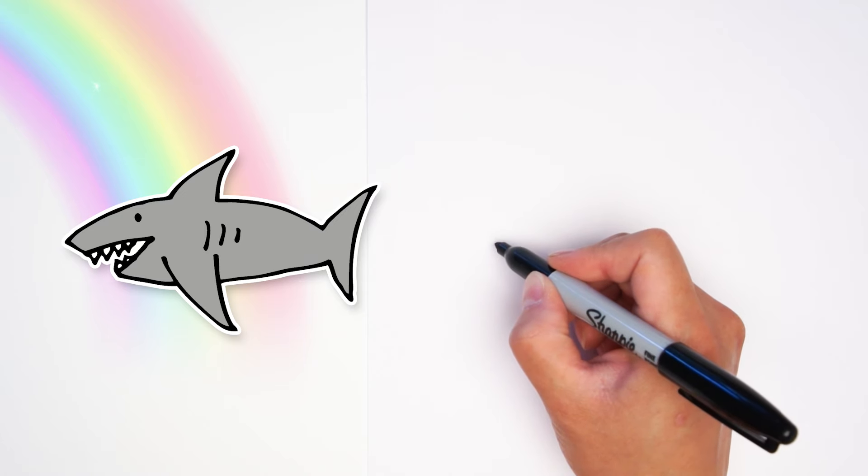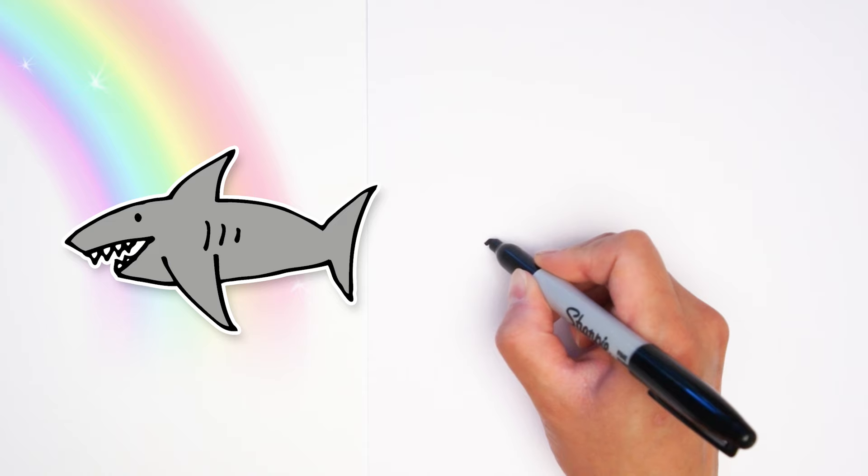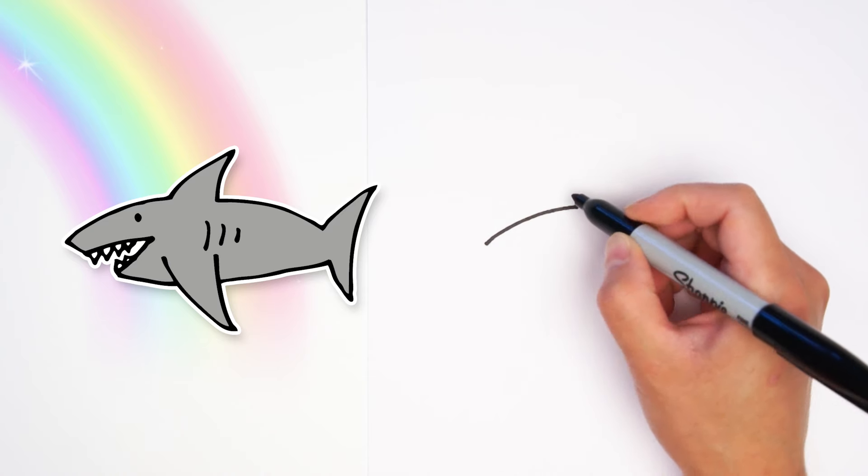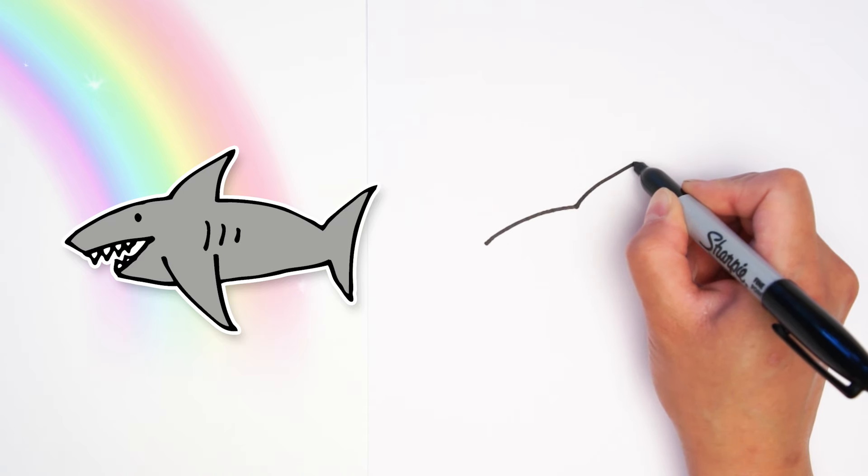Alright, grab a pen or a pencil and we're going to start by drawing the tip of his nose and a curved line going out to the side over here and then up tall to make a fin.